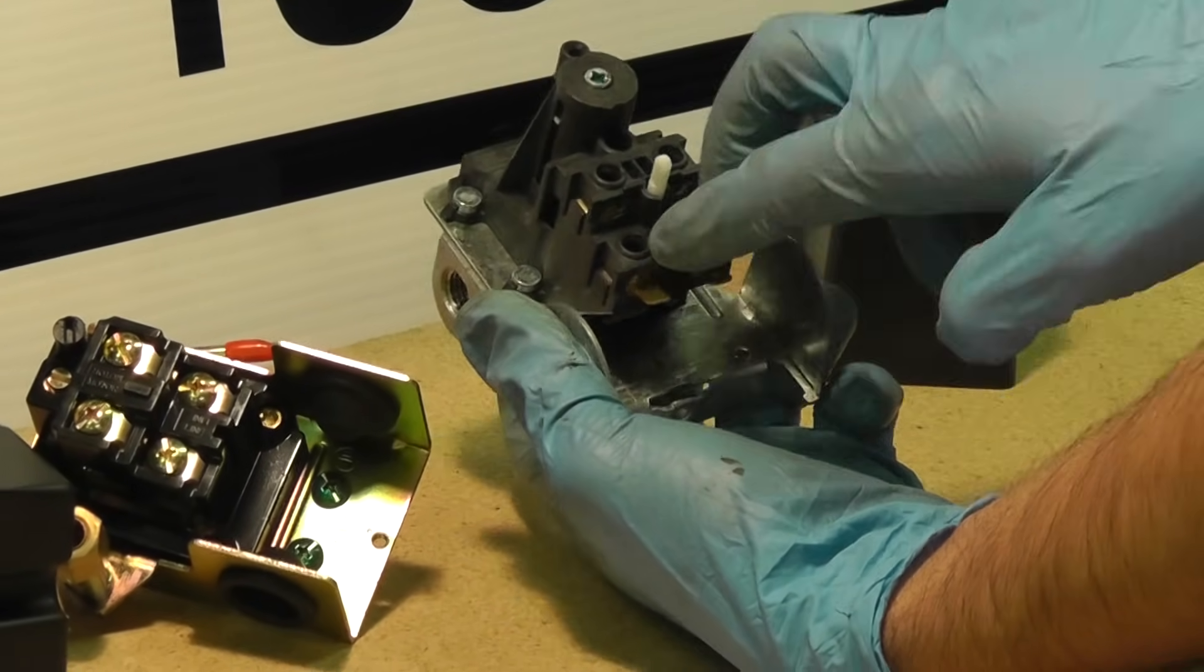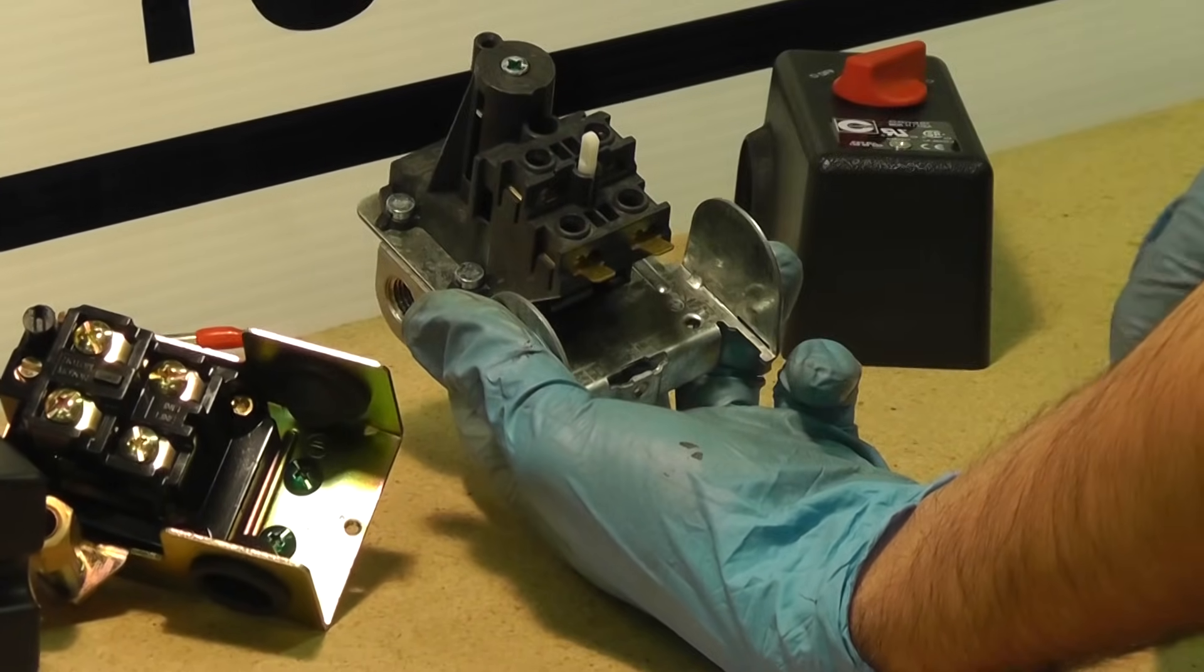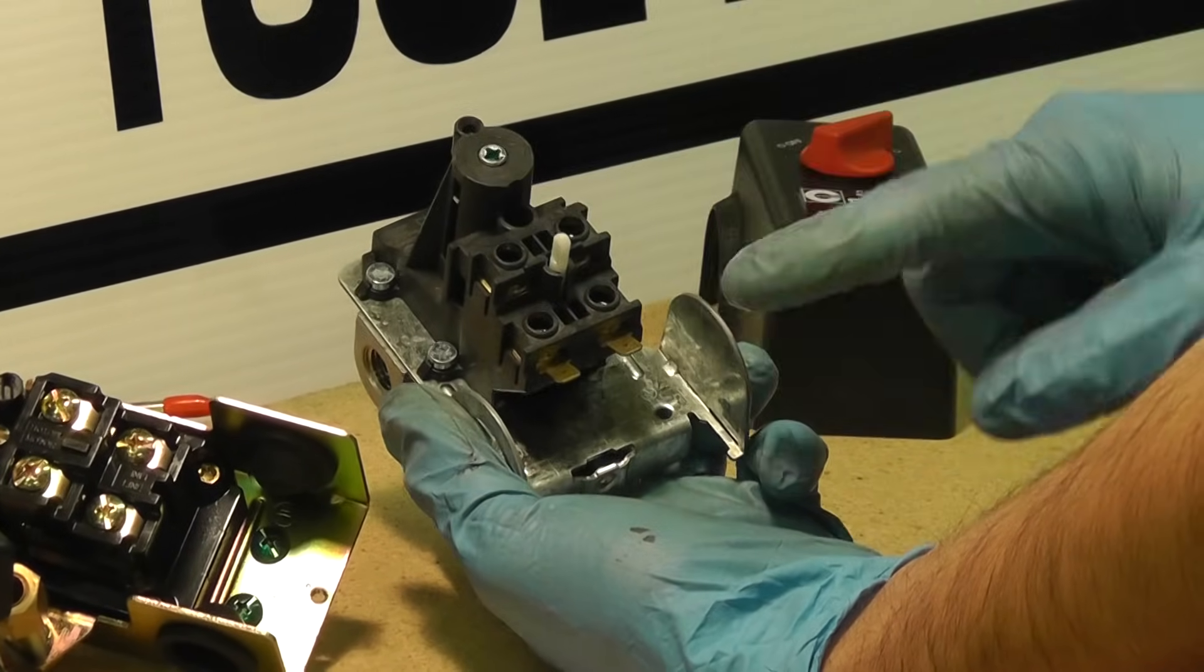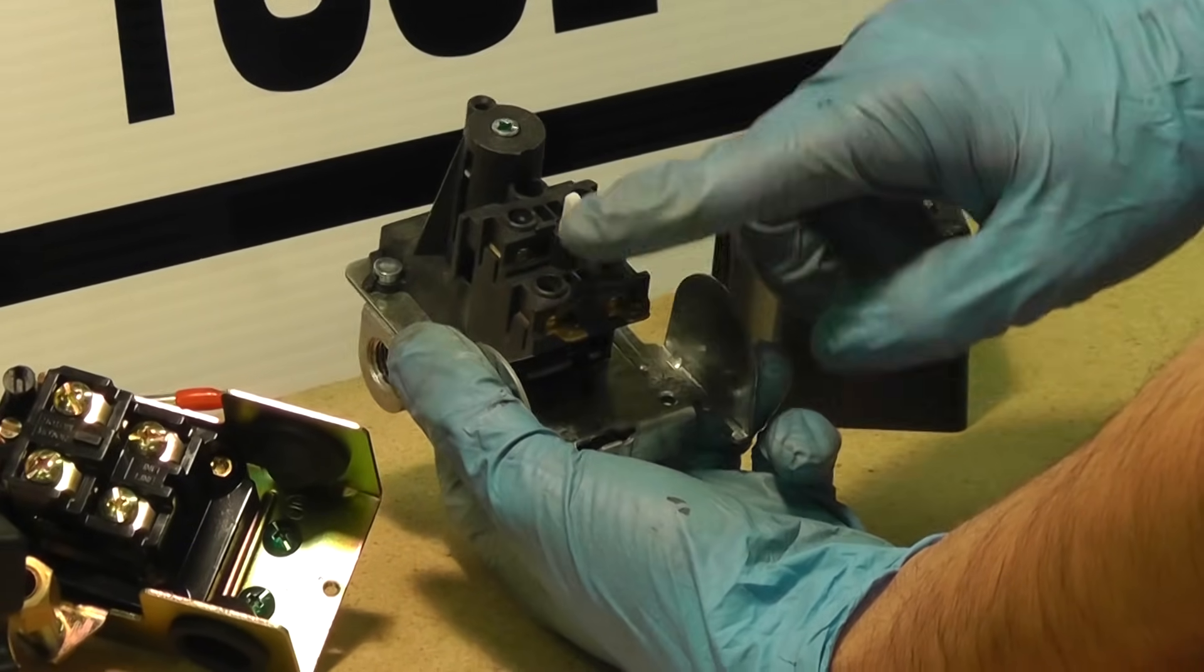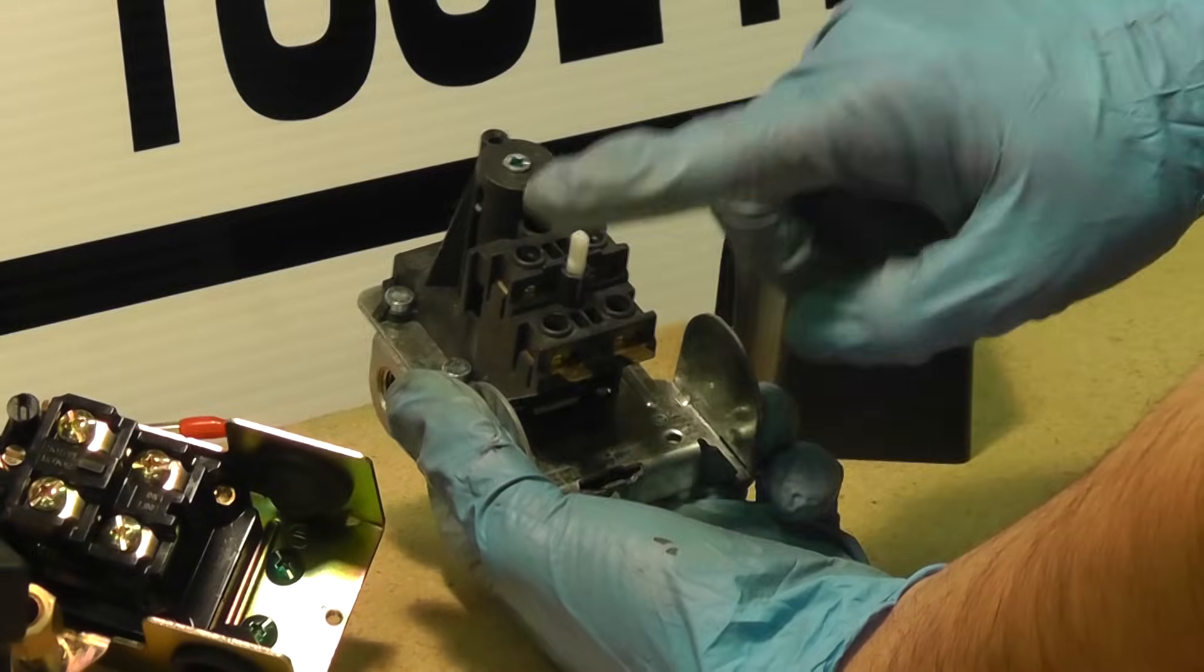So line on the top, motor on the bottom. Install black and white from the power cord in the line. Black and white from the motor cord, from your wall to your motor on the motor section.